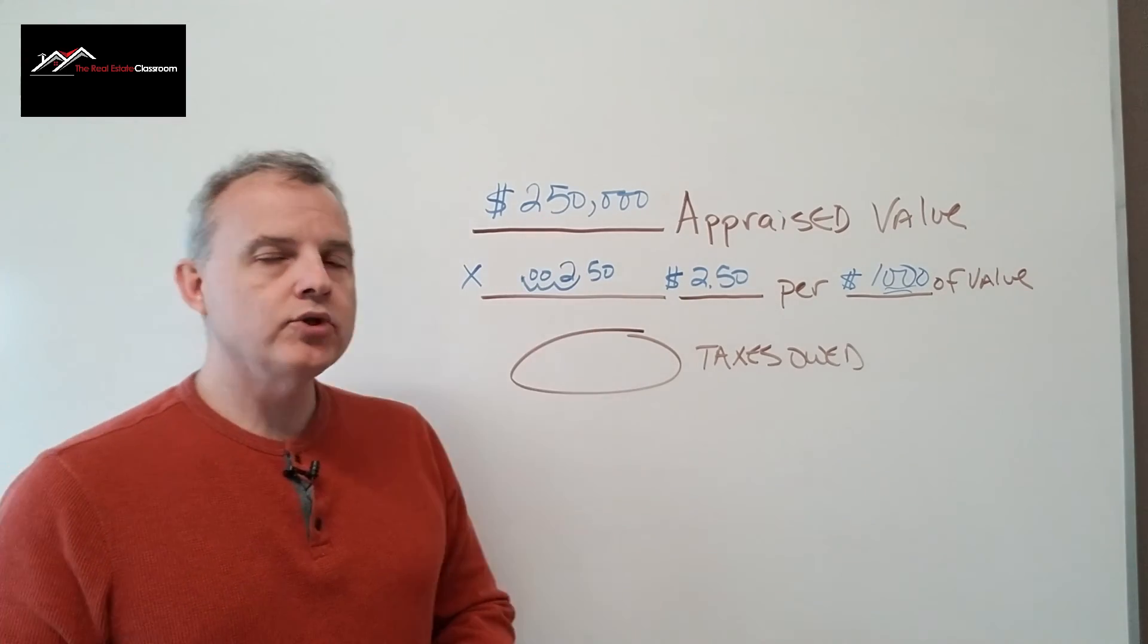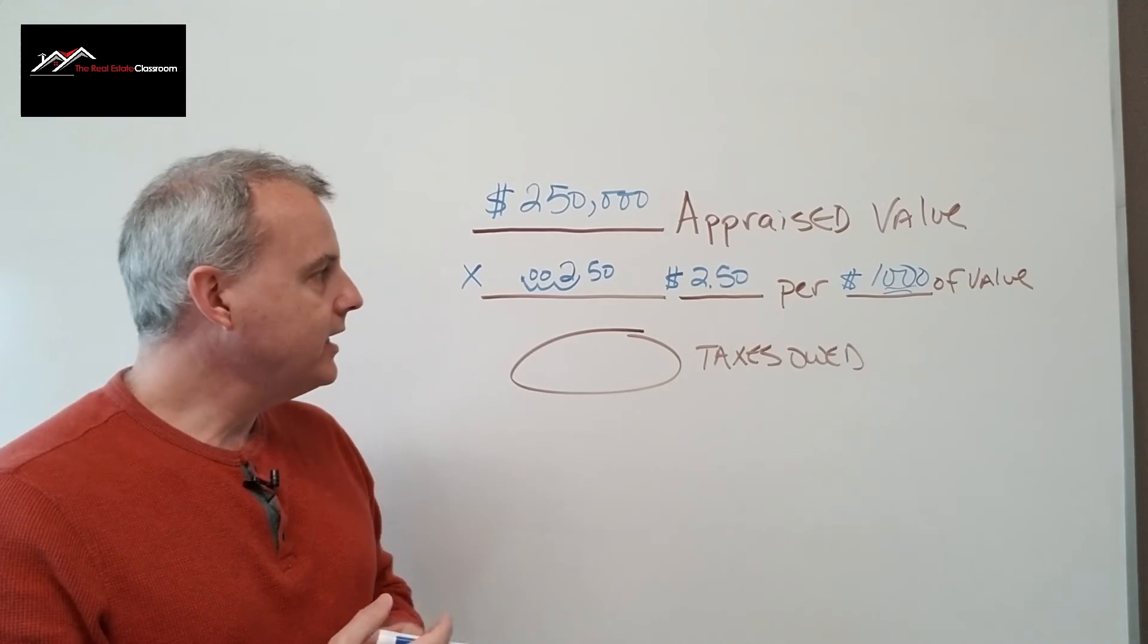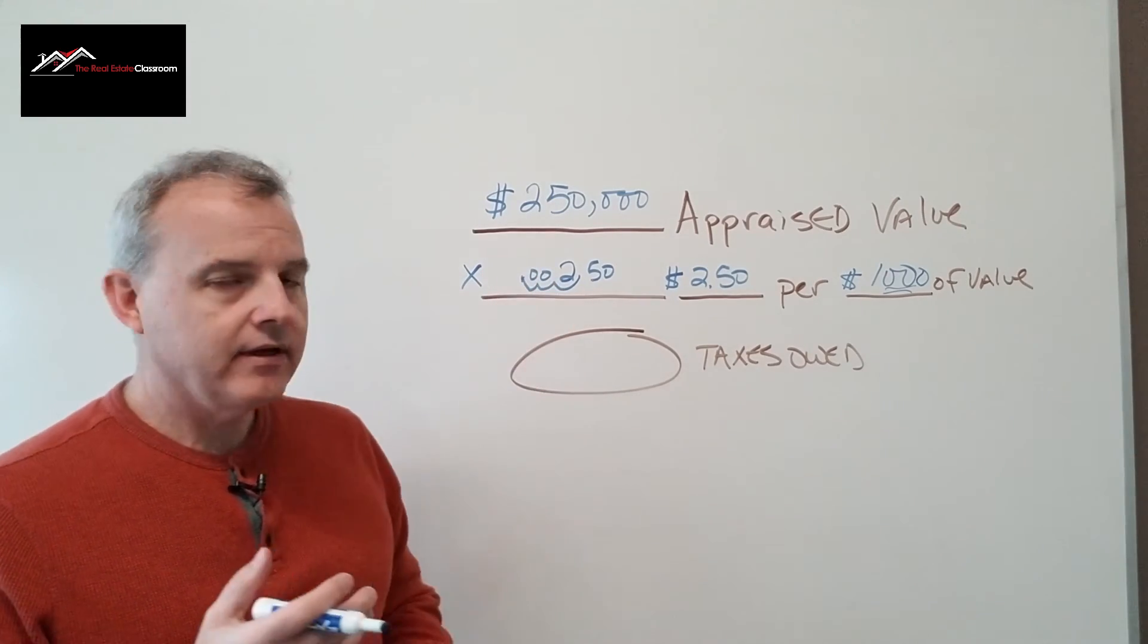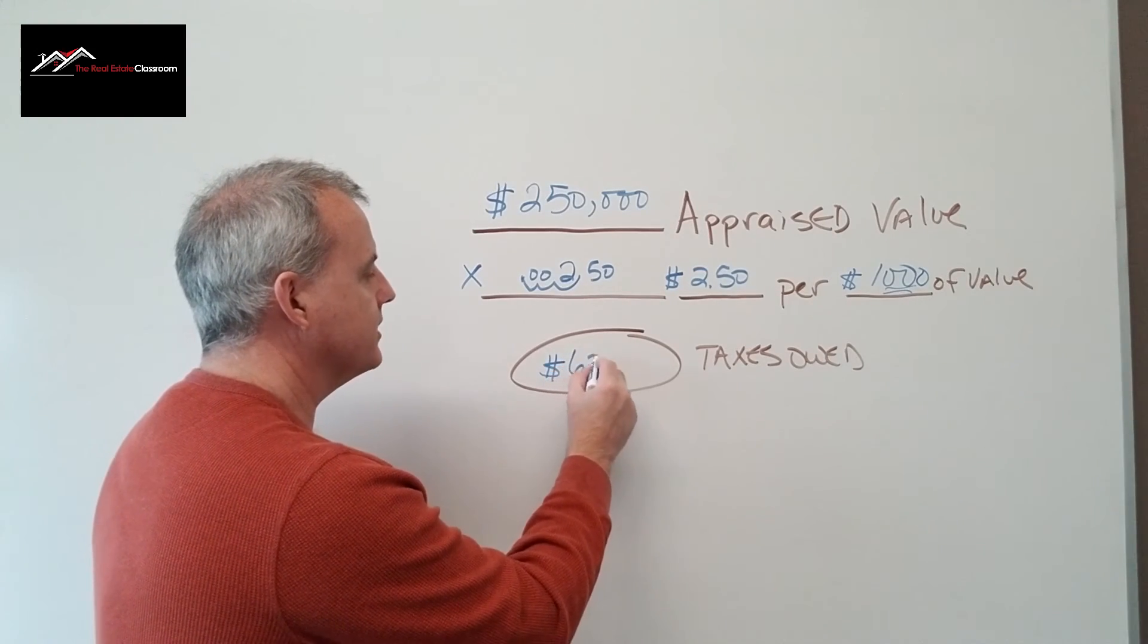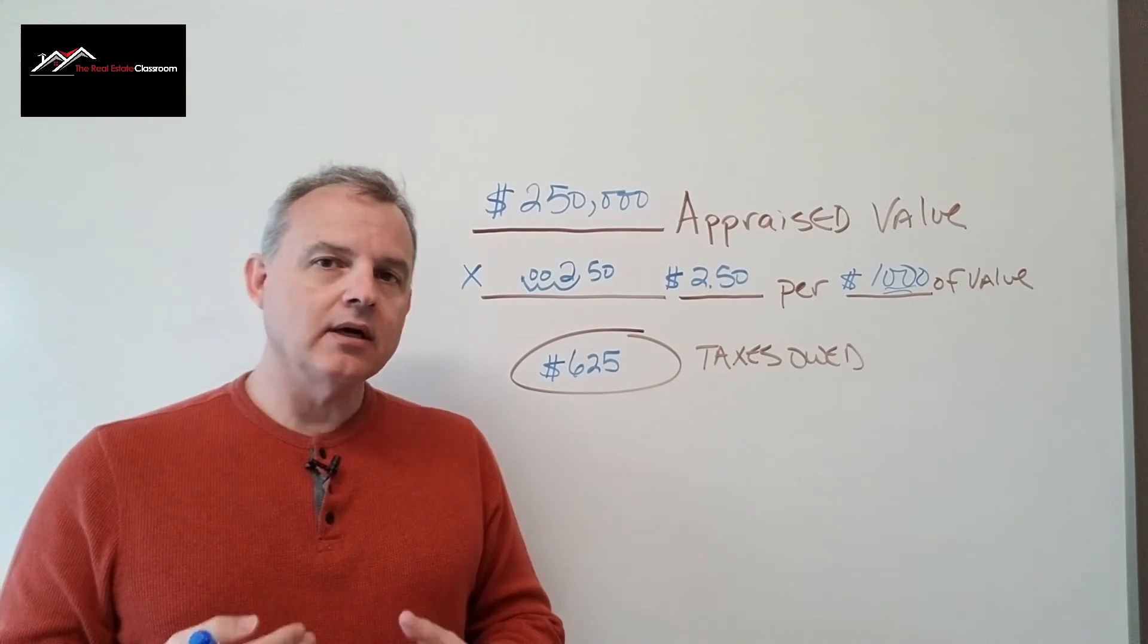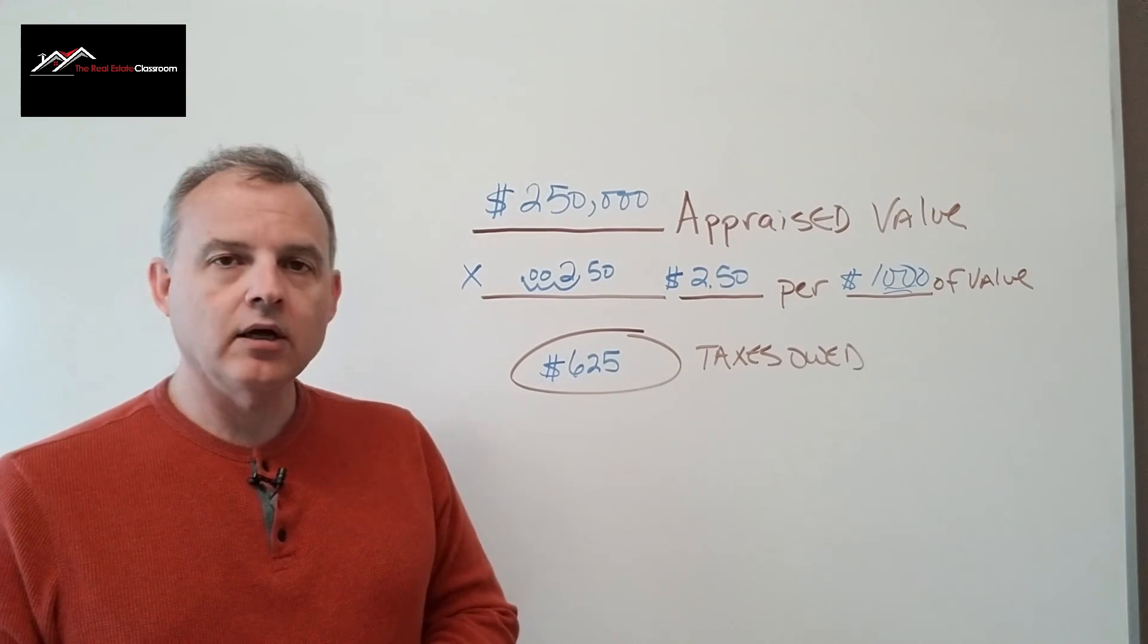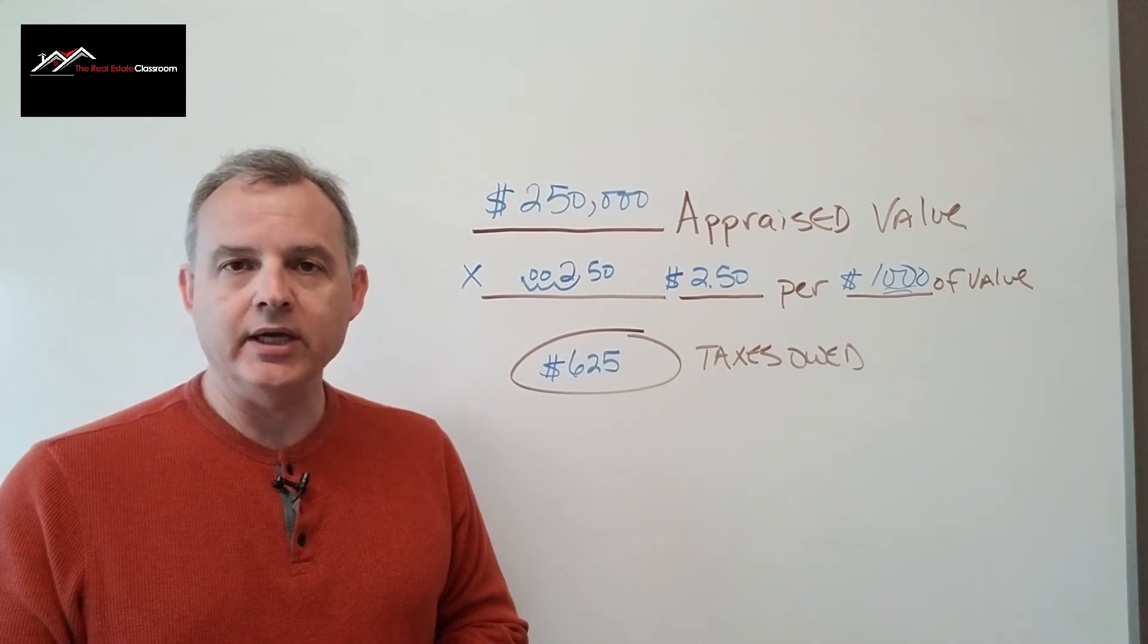So we take $250,000 and multiply it by 0.0025, and that gives us the amount of tax owed in the amount of $625. It's just a quick little shortcut on how to calculate property taxes when you're using the valuation method.